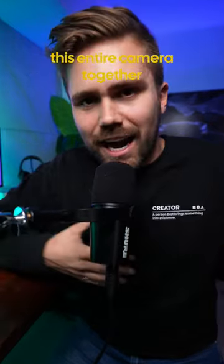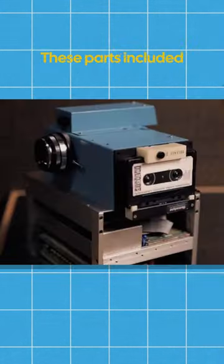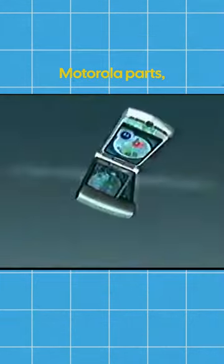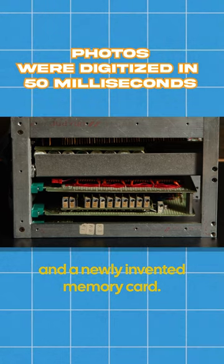He essentially Frankensteined this entire camera together using parts that he found laying around the office. These parts included a Super 8 lens, Motorola parts—hello Moto—16 batteries, and a newly invented memory card.